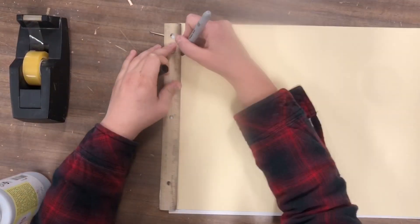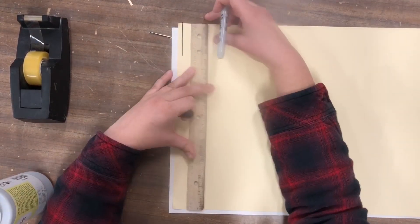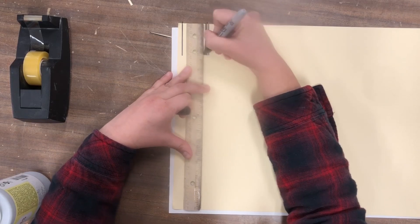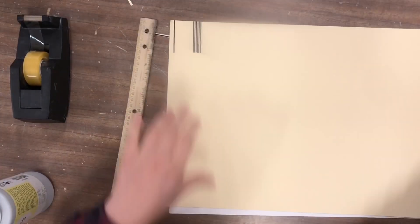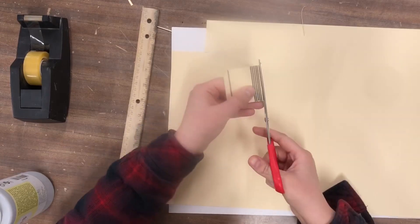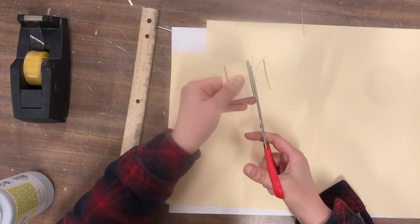For a hexagonal prism, you'll need two identical hexagons and six identical rectangles. Since the hexagon is a complicated form to draw, unlike a square or triangle, I'll show you an easy way to create a hexagon.